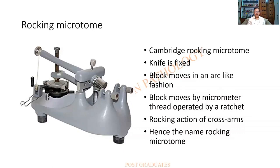The rocking microtome — I have tried to download the best pictures; students should carefully follow and apply the description to the pictures. This is a Cambridge rocking microtome. The knife is fixed; this is the knife holder. The block moves in an arc-like fashion, maneuvered by a micrometer thread operated by a ratchet. There are two arms called the cross arms, and they keep rocking — hence the name the rocking microtome.